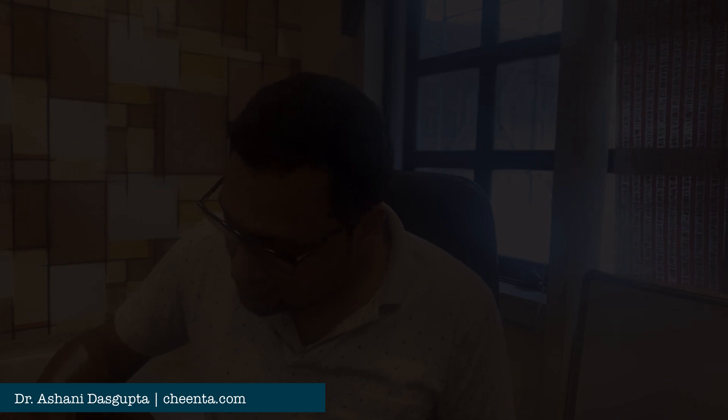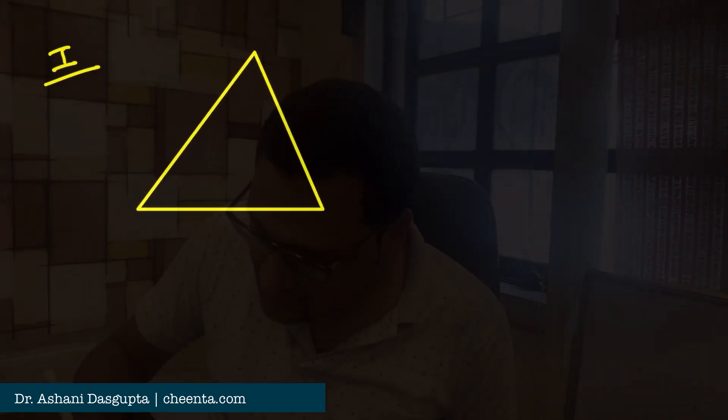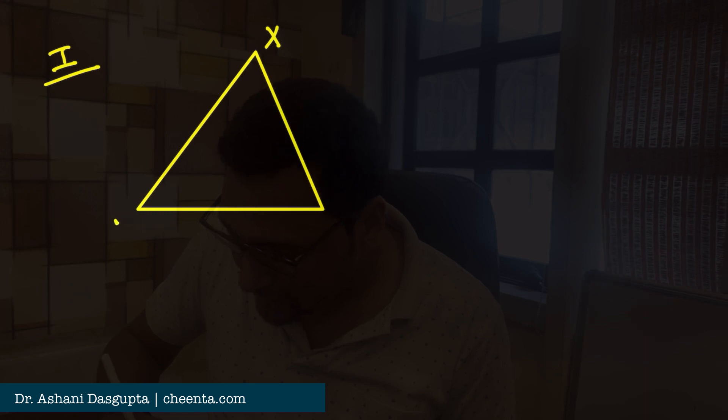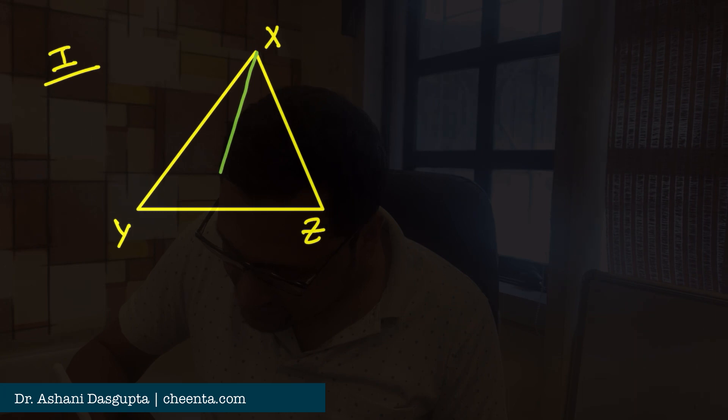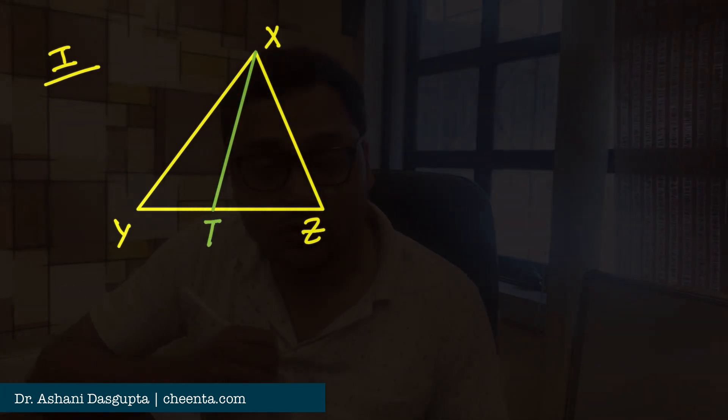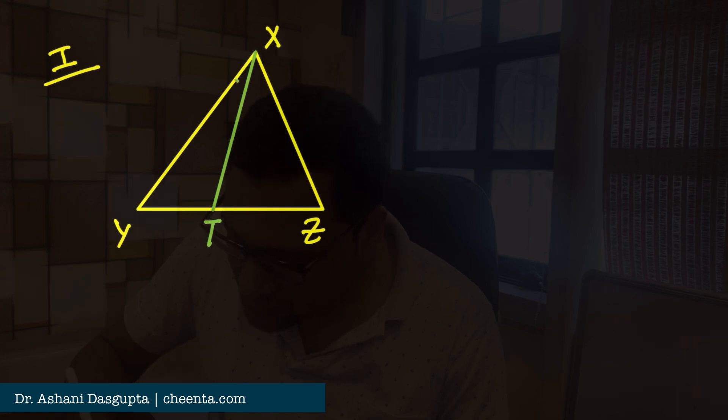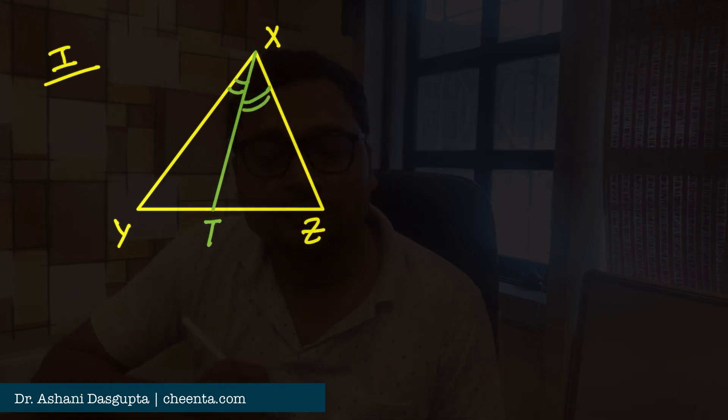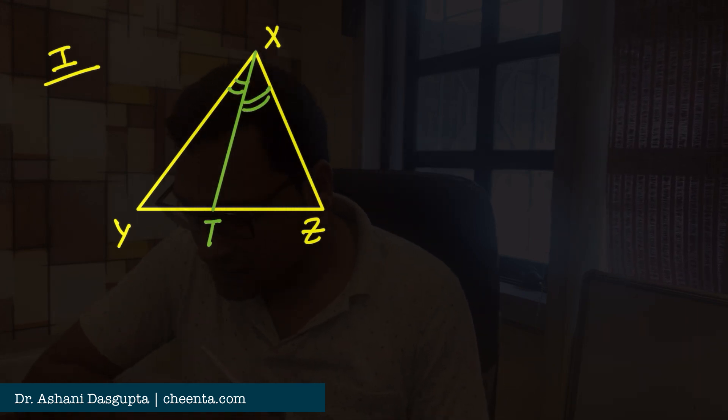So what is the angle bisector theorem? That's the question number one. It simply says that if you have a triangle, let's say X, Y, Z, any triangle. And if you have the angle bisector, that is XP suppose. So these two angles are equal. That's the angle bisector of angle X. Then...